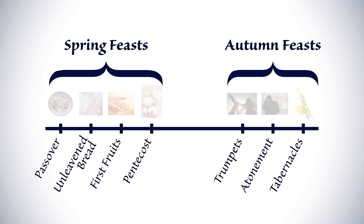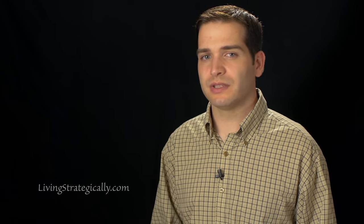What do these feasts foreshadow? Well, this is where things get interesting. The four spring feasts were all specifically fulfilled in the crucifixion, resurrection, and the outpouring of the Holy Spirit that we read about in the Gospels and the book of Acts. But it wasn't enough for God to merely fulfill the prophetic meaning of each feast. He orchestrated events so that each one was fulfilled on the exact day of the feast. God's word is incredibly precise and accurate.